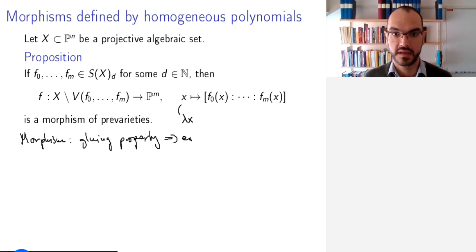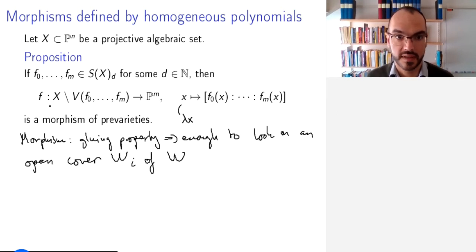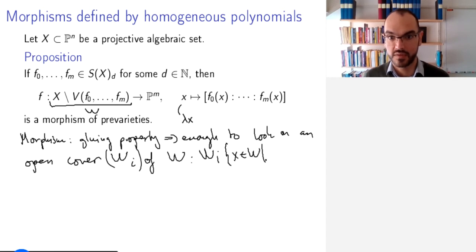it is enough to look on an open cover Wᵢ of our W, and W is the name I will give for this domain. And so what will Wᵢ be? Well, I will take Wᵢ to be the set of all x in W such that fᵢ(x) is not 0.